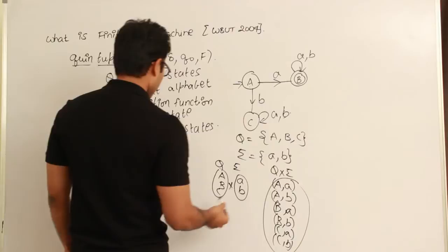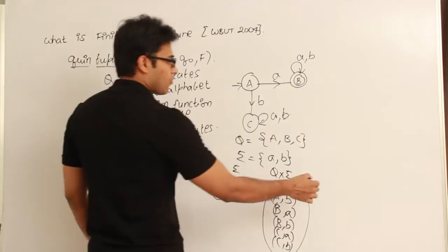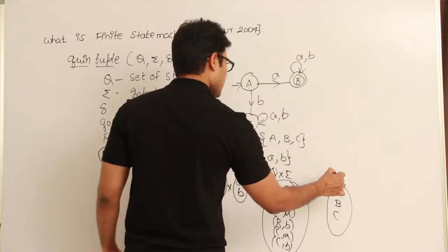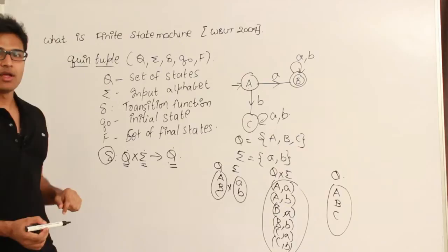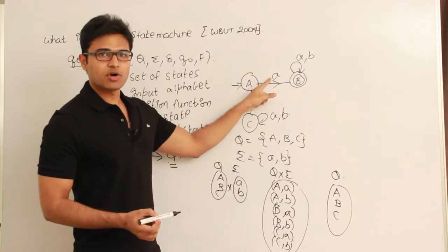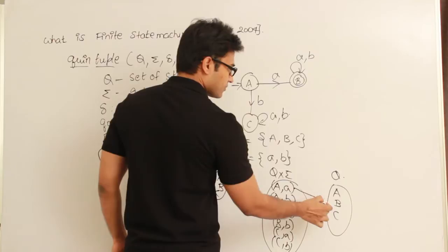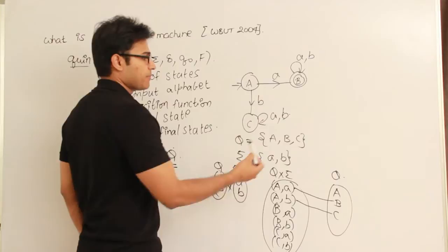Delta maps Q cross sigma to Q. For this example: capital A on seeing small a goes to b, and capital A on seeing small b goes to c. That is the mapping — delta is a function from Q cross sigma to Q.